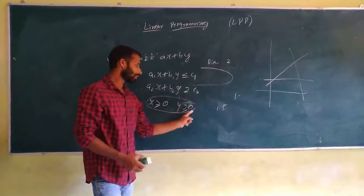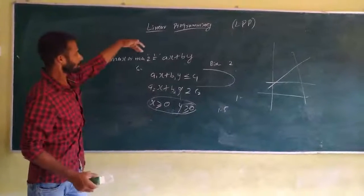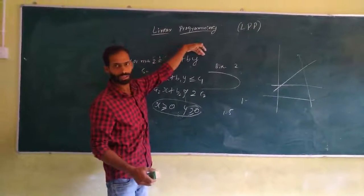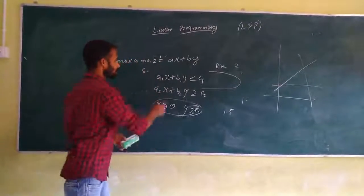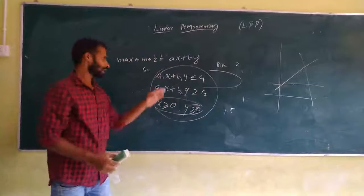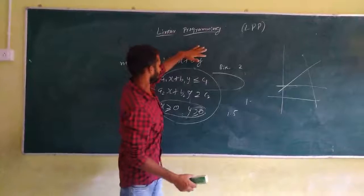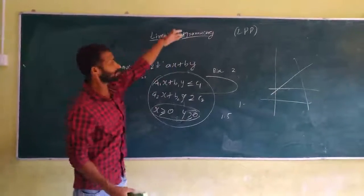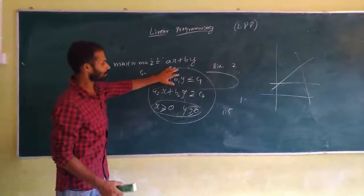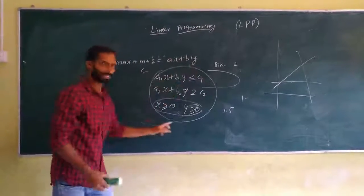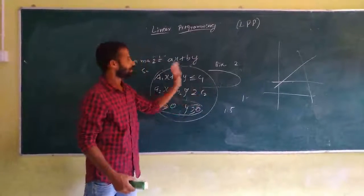These are the non-negative constraints. Maximize or minimize z — that is the cost function or profit function. These are the conditions. To find the maximum or minimum using linear programming, first draw the graph of these constraints. This is the objective function.